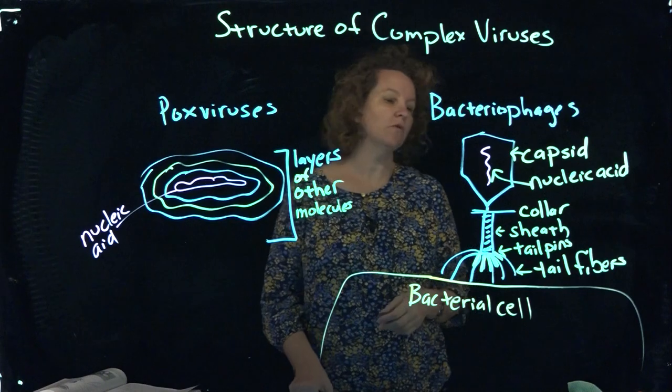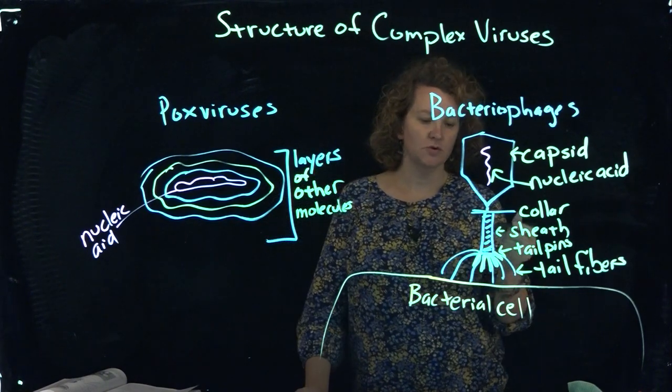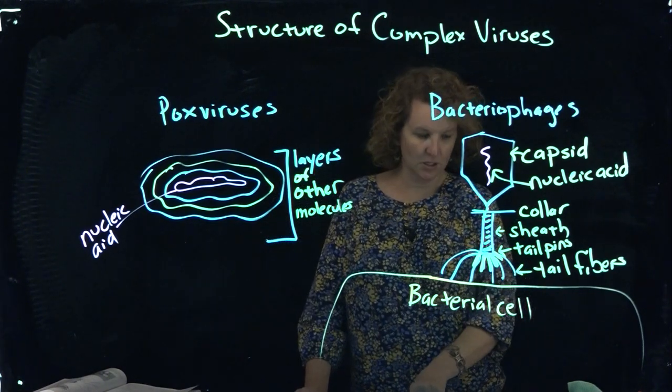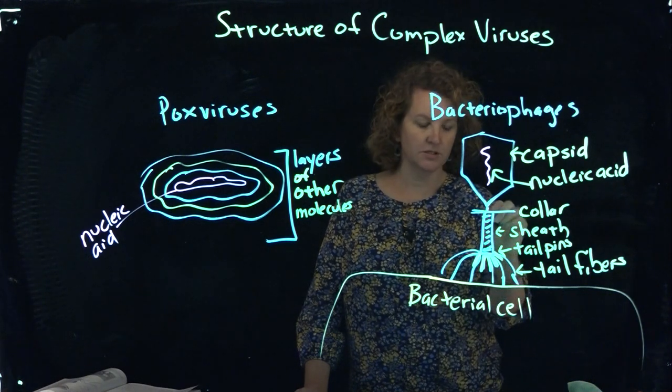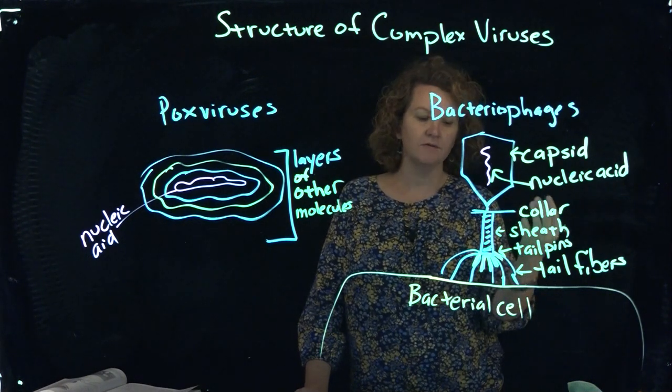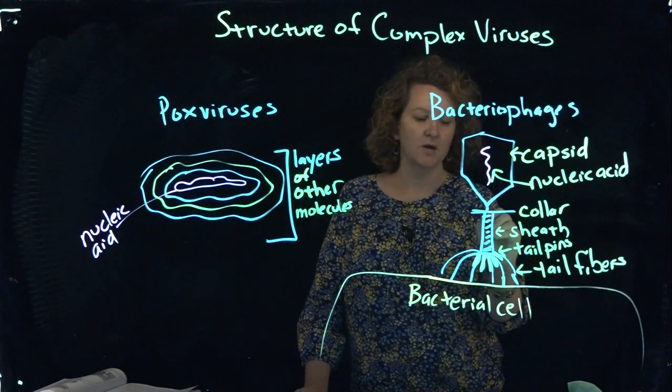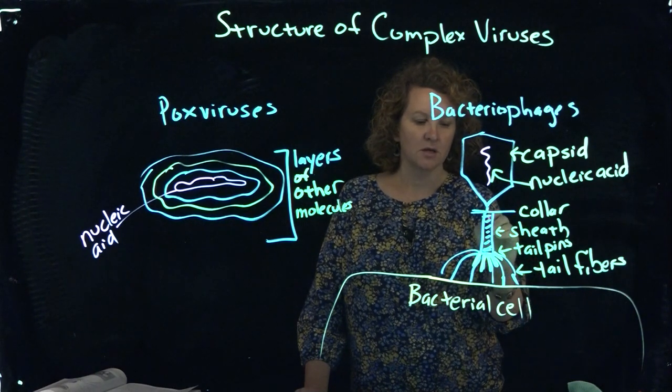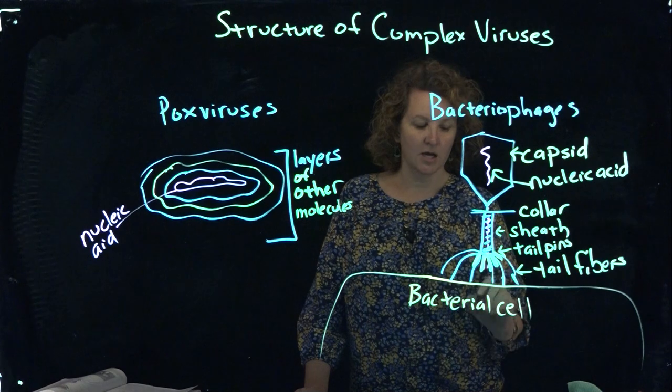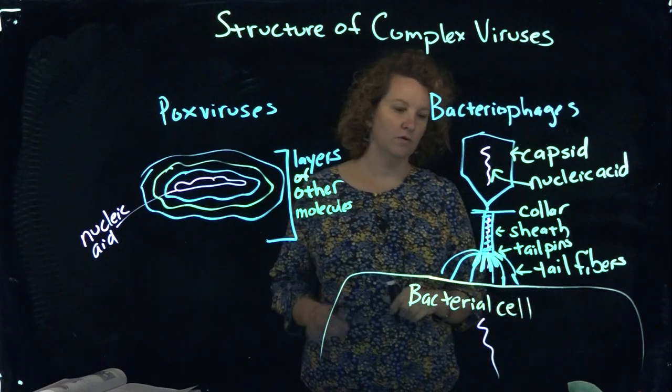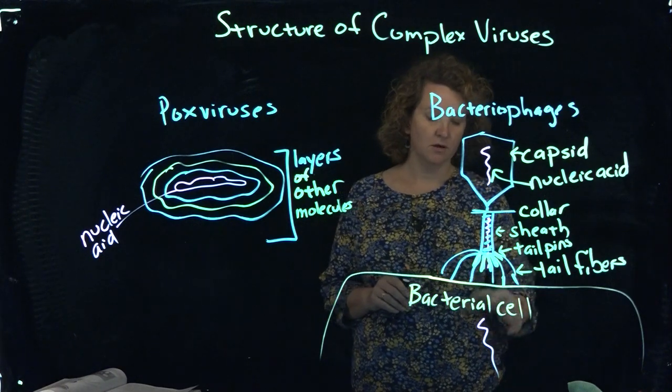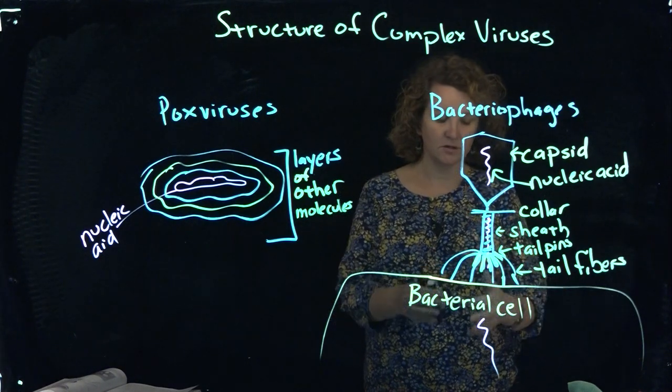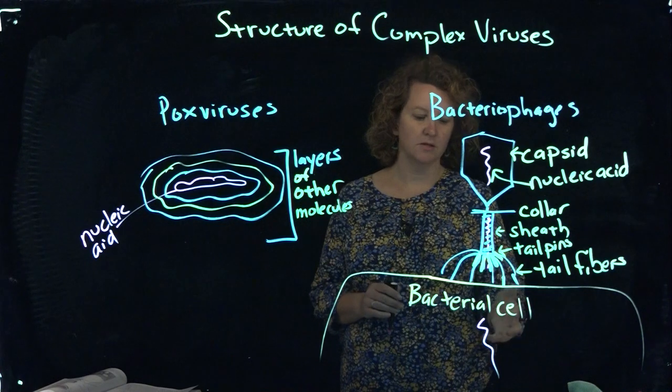So what they need to do for adsorption and penetration is they actually bind to the host cell surface. And then ultimately they're going to use this sheath. It's kind of like a spring, or I think of it as like a syringe, contracts after there's attachment or adsorption, and it's going to inject that nucleic acid over the cell wall. So that's actually going to allow the bacterial cell, that's enough information for that virus to take over the bacterial cell.